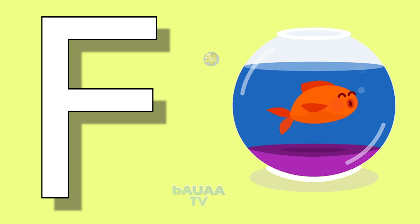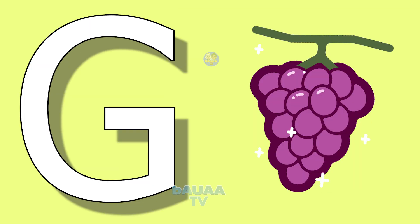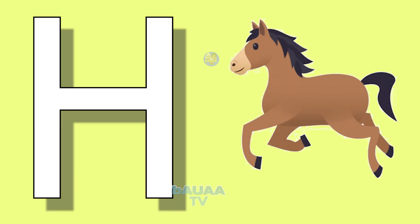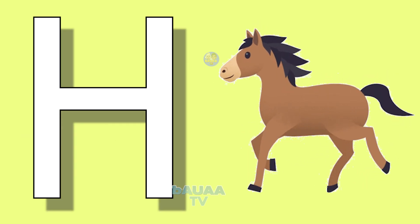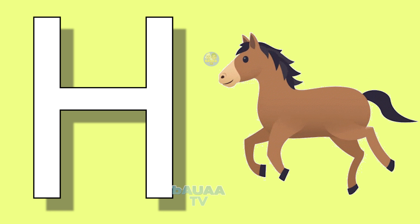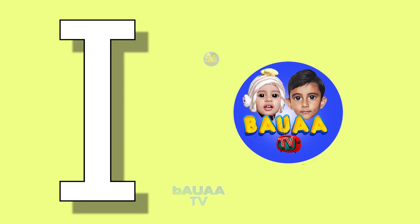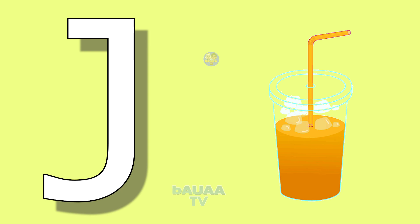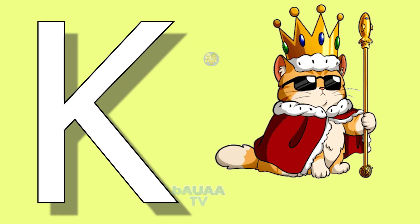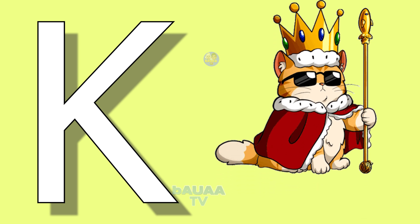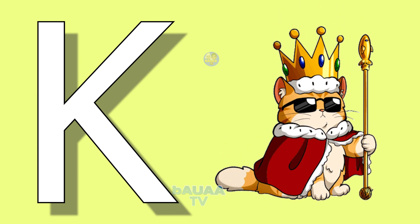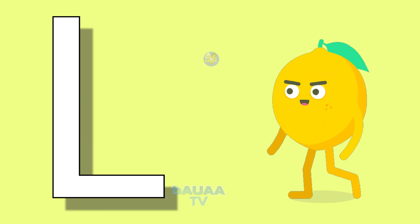G for grapes, grapes means angur. H for horse, horse means ghoda. I for icon, icon means chin. J for juice, juice means juice. K for king, king means raja.